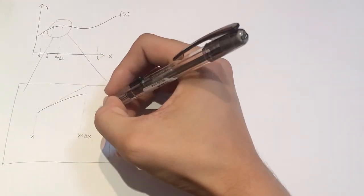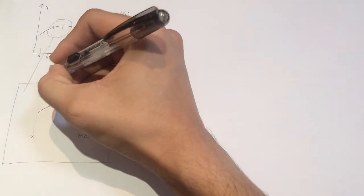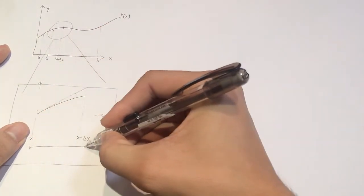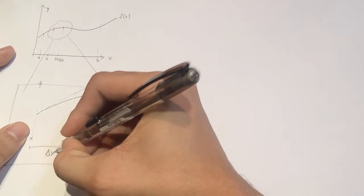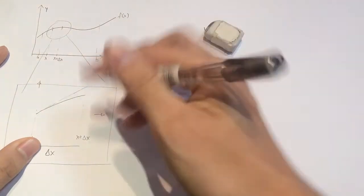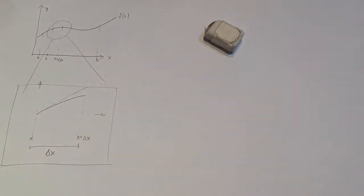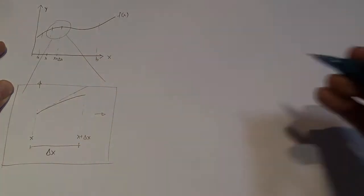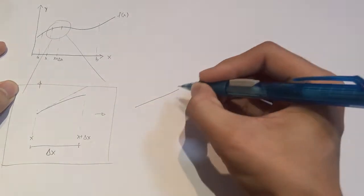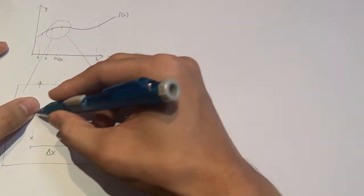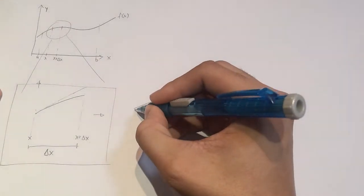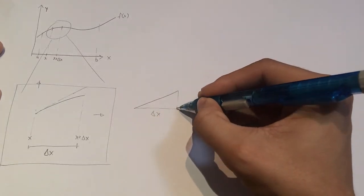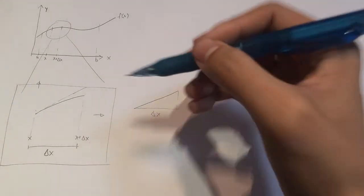With a straight line we can work out how far it goes in the x direction and also find out how far it goes up in the y direction. The x direction would be delta x. Now we have to work out how far our straight line goes up in the y direction. We draw the straight line here. How far does it go up in the y direction? Well, we know it goes along delta x in the x direction, so we have to find that.